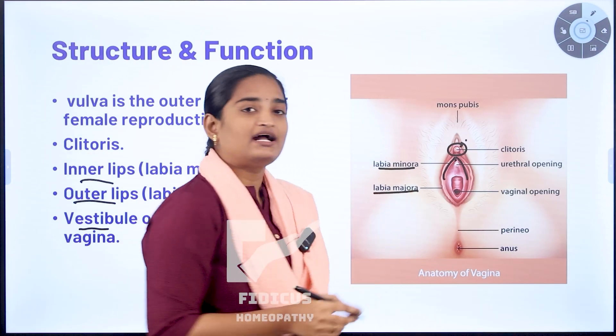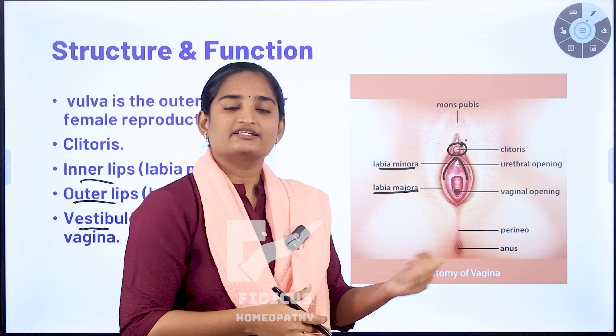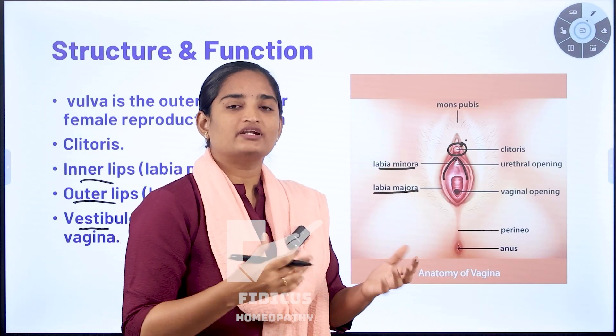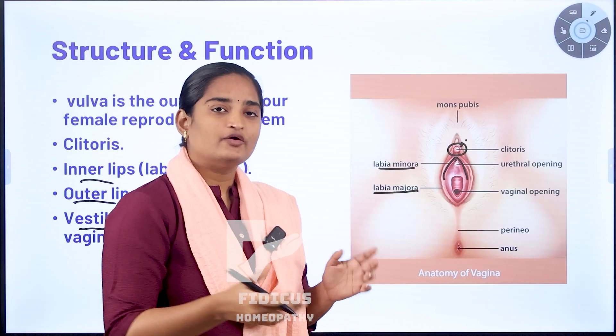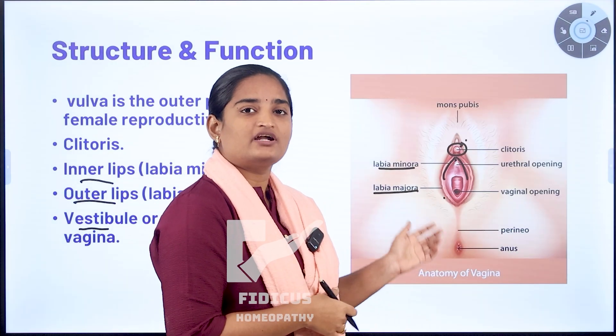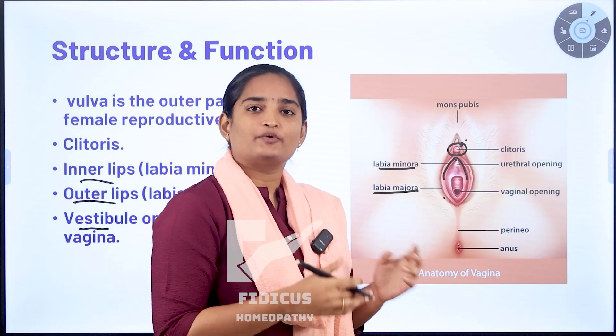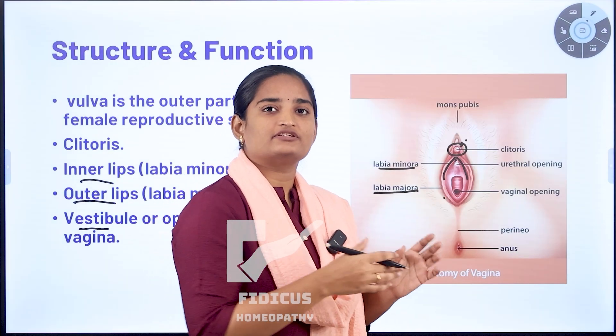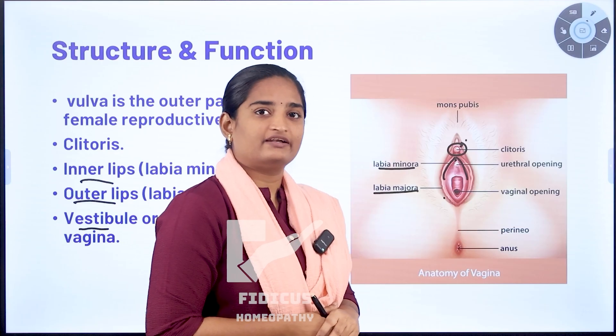Now labia majora, also called as external lips or outer lips. These are large fleshy folds. These labia majora and labia minora can protect the urethra and vagina.